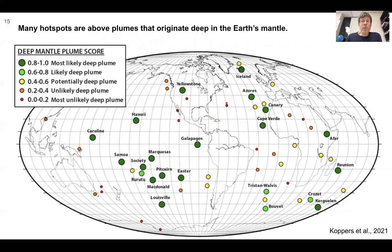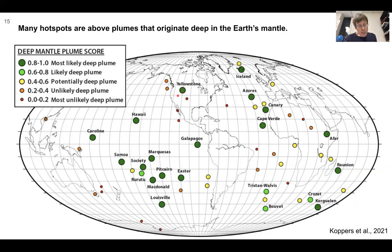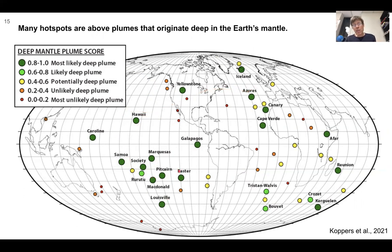Many hot spots are above plumes that originate deep in the earth's mantle. Just because there is a hot spot visible at the surface as a tract of volcanoes — such as Hawaii, Cobb, Bowie, or Yellowstone — doesn't tell us the depth of origin. These authors have used geochemistry, rock data, and seismic imaging of the plumes to determine quantitatively which hot spots are most likely to come from deep sources. You can see a lot of green dots in the Pacific, suggesting that many of these are coming from deep sources.